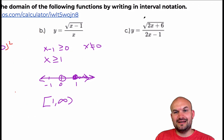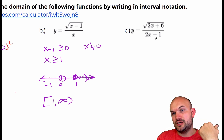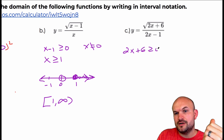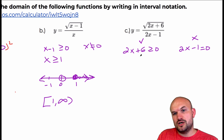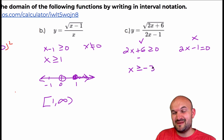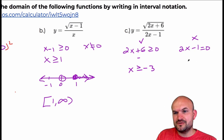Now we again have a radical in the numerator and a denominator, so we need to find values that make the denominator equal to zero as well. I set my radicand greater than or equal to zero, and then set my denominator equal to zero to solve. The radicand condition gives x is greater than or equal to negative three after subtracting six and dividing by two. The denominator condition gives x is equal to one half after adding one and dividing by two.